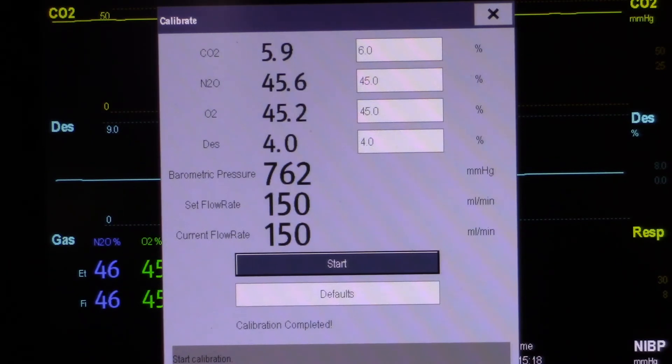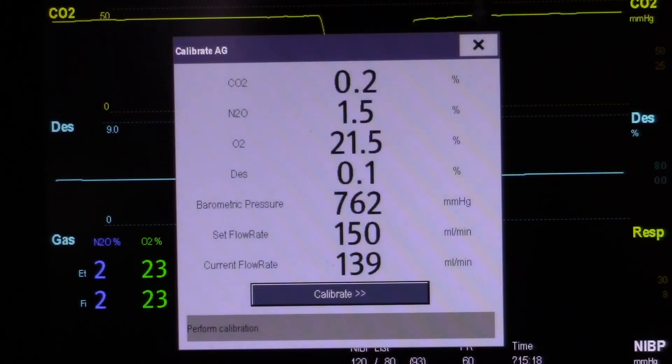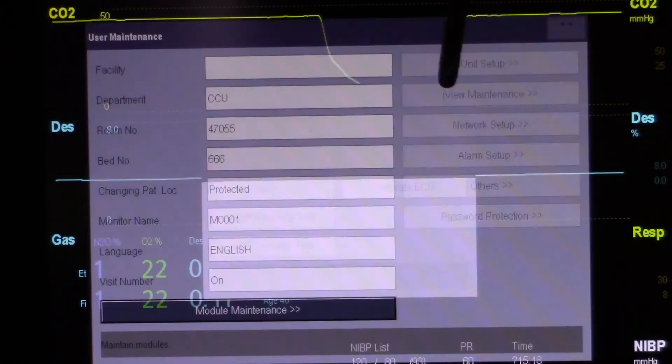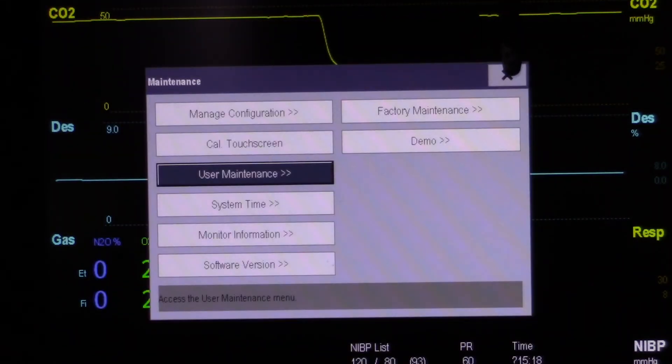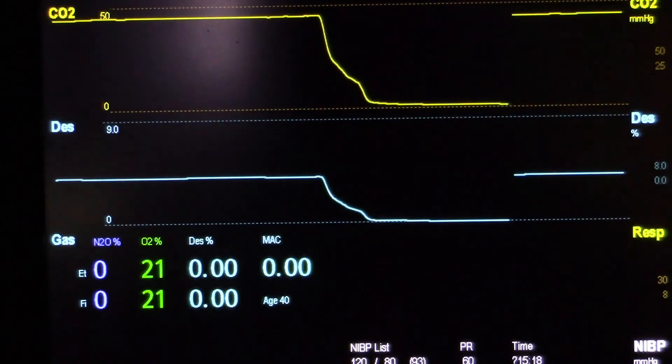To exit, touch the X in the upper right hand corner several times until you get into the main operating menu. Your calibration is now complete.